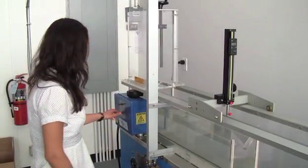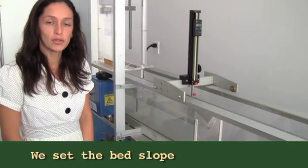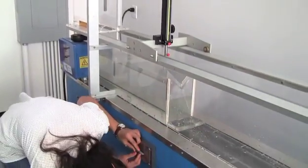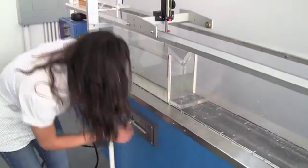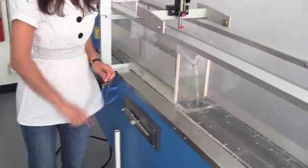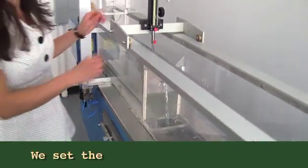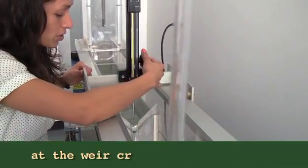Good morning. Today we are going to demonstrate the V-notch weir. We turn on the pump. We set the bed slope equal to one percent and we check the level. We set the point gauge at zero at the weir crotch.